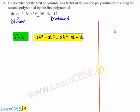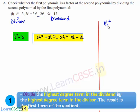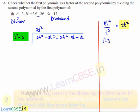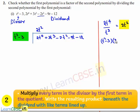The highest degree term of the dividend is 2t⁴ and the highest degree term of the divisor is t². On dividing them, we get 2t², which can be written at the place of the quotient. The divisor t² minus 3, multiplied by 2t², is equal to 2t⁴ minus 6t².